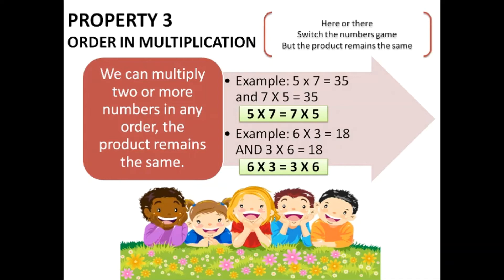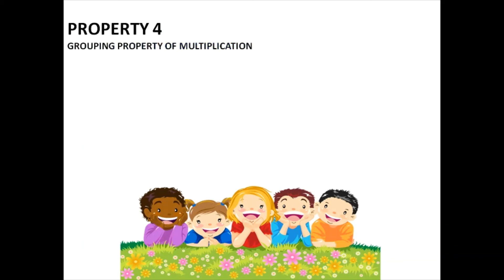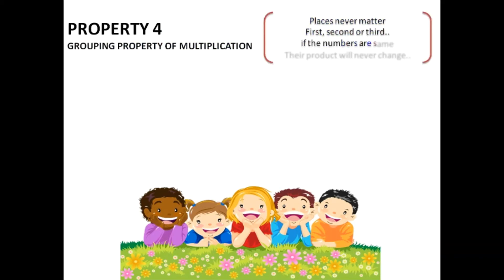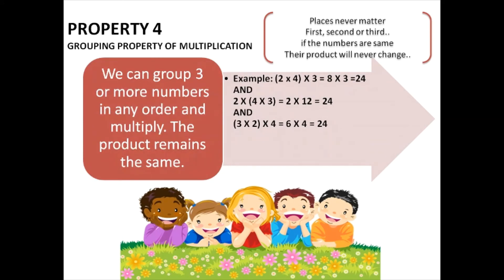Let's go to property number four: the grouping property of multiplication. Places never matter — first, second, or third. If the numbers are the same, the product will never change. We can group three or more numbers in any order and multiply, and the product remains the same.